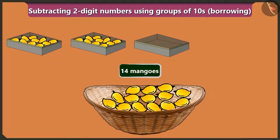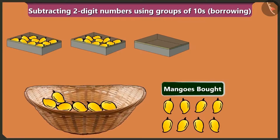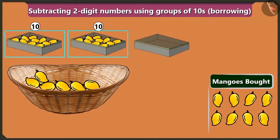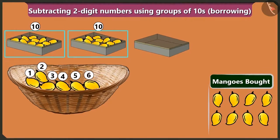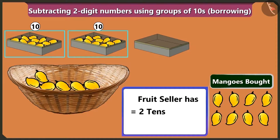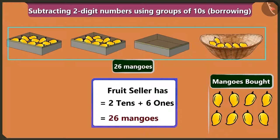Bubbly, now tell me, if you will buy eight mangoes out of the fourteen mangoes, then how many mangoes would the fruit seller be left with? Mummy, there are two boxes of ten mangoes each, and there are one, two, three, four, five and six mangoes in the basket. So the fruit seller would have two tens and six ones, means twenty-six mangoes left.